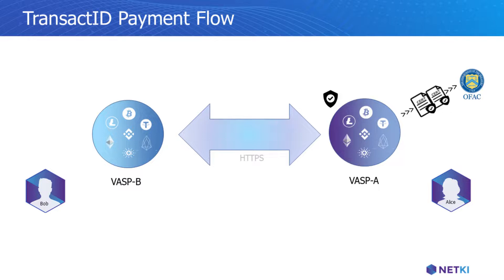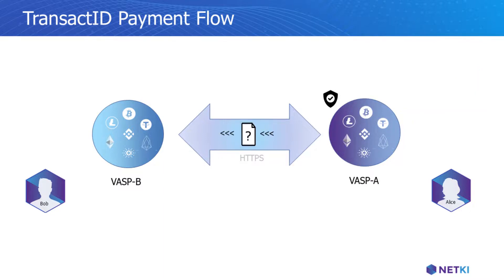If compliance fails, VASP A refuses the transaction and it is cancelled. If VASP A needs more data about VASP B, they can request it.